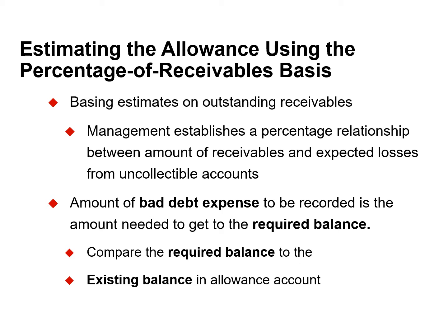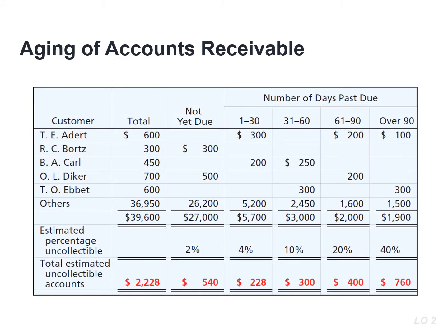You simply compare the required balance to the existing balance in the allowance account. To more accurately estimate the ending balance in the allowance account, a company often prepares a schedule called aging of accounts receivable. This schedule classifies customer balances by the length of time they have been unpaid.